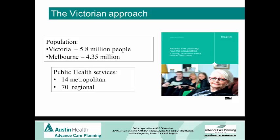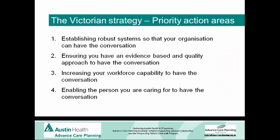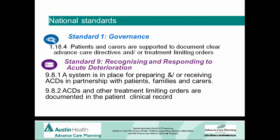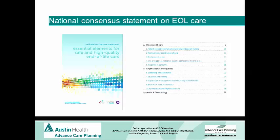I just wanted to touch on the Victorian approach. This is the Victorian strategy 2014 to 2018. The Victorian Department of Health recognised they've got lots of health services — 84 of them — and a high population, and wanted to get things happening. They set up priority areas around systems, around evidence, around workforce capacity, and around the person themselves. The national standards are very important, as is the consensus statement. I think these are the drivers that will drive change.